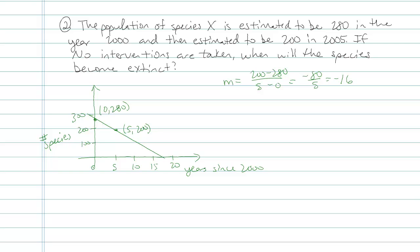That tells me, by the way, that my change in y, so change in species, individual species X, is on top of my change in x, the years. It tells me I'm losing 16 of these species per year. My species population is declining by 16 individuals per year.